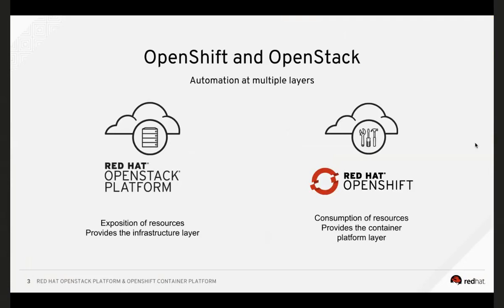OpenStack, as many of you know, is an infrastructure as a service platform where you have resources exposed to you, which are consumed usually by tenants or by other applications — as is the case with OpenShift. Those resources are commonly compute, storage, and network. They get quite sophisticated as well — load balancing as a service, for example.